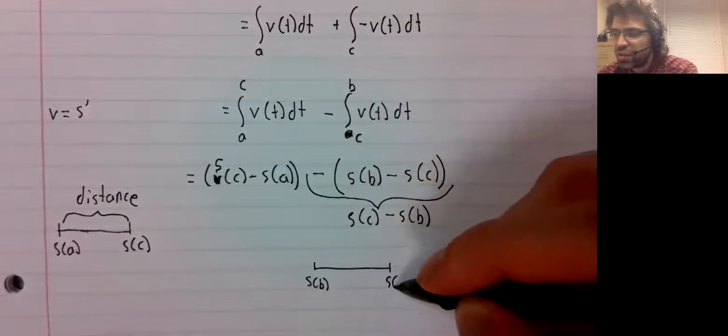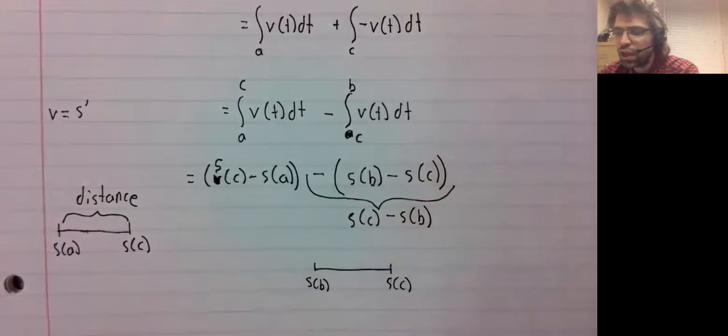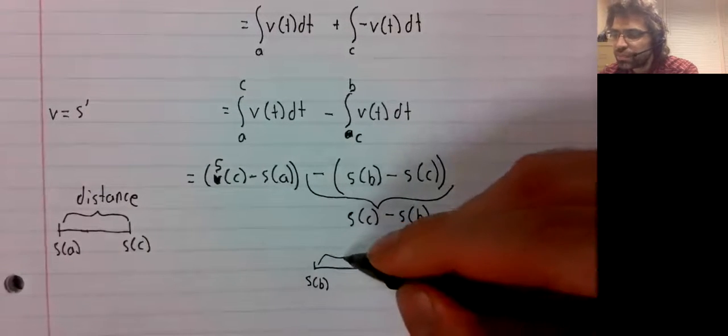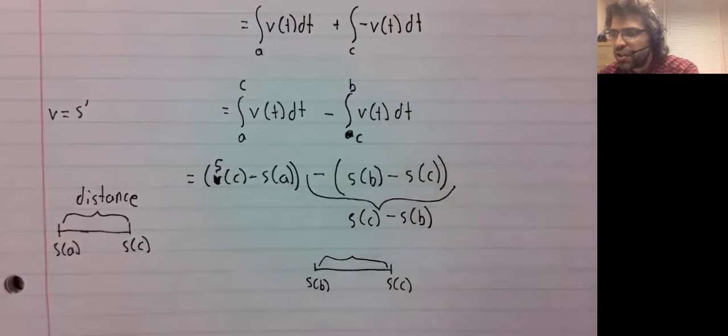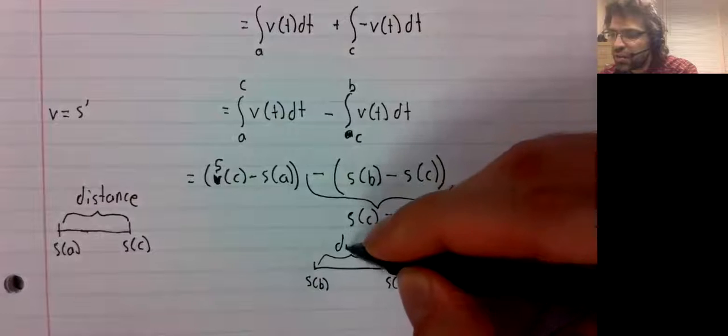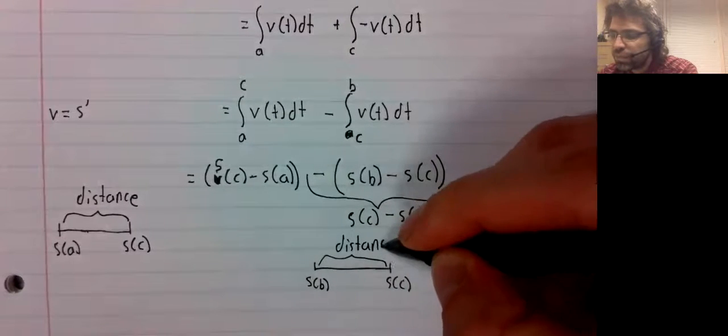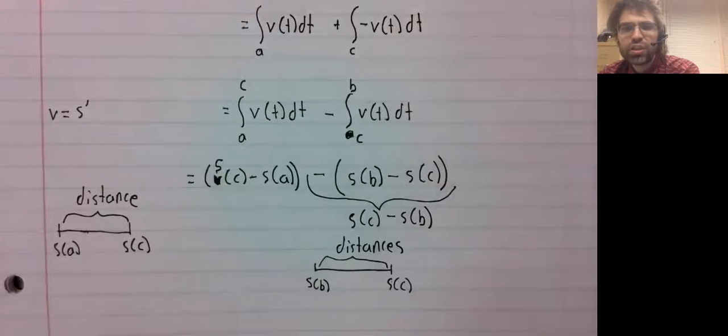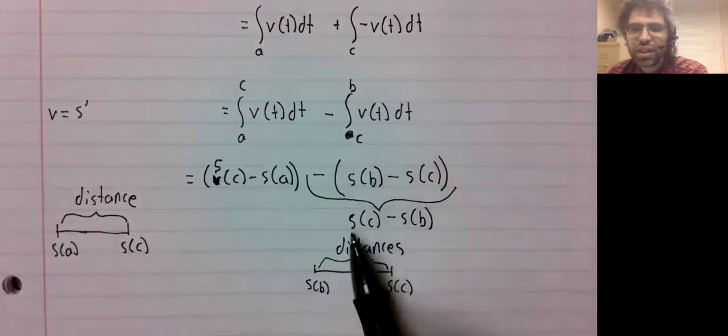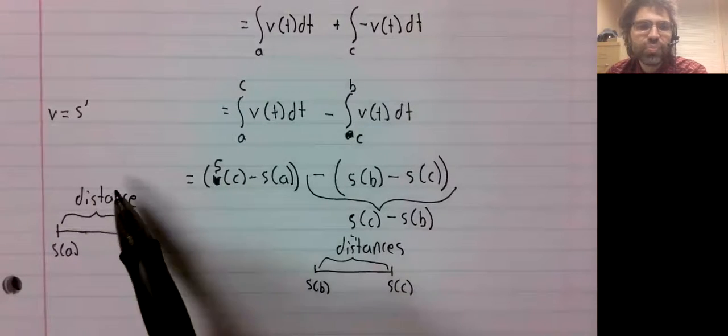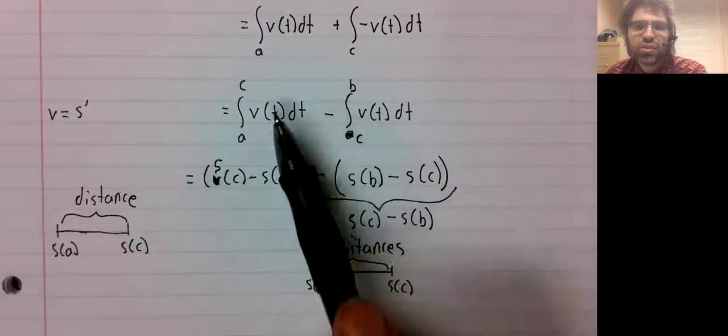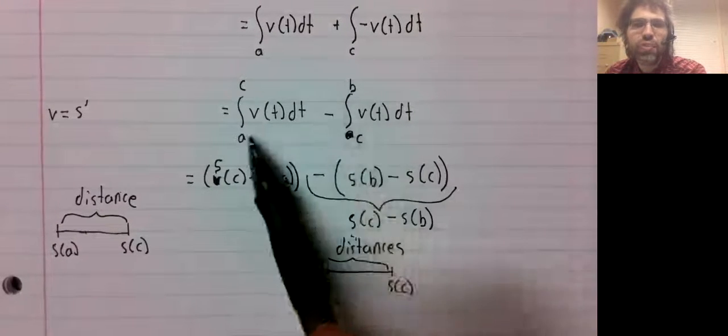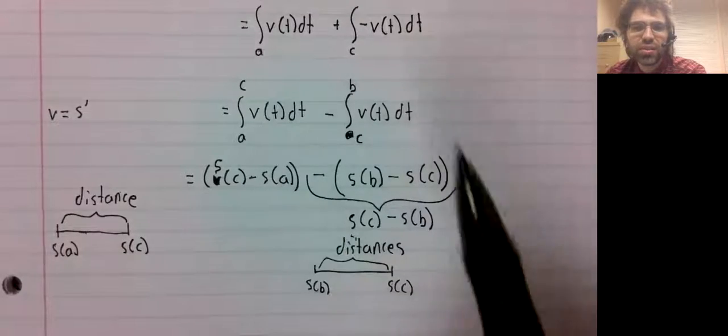And S of C is here, and S of C is to the right of it. And again, S of C minus S of B is the distance. This is a distance, this is another distance—these are merely two distances.